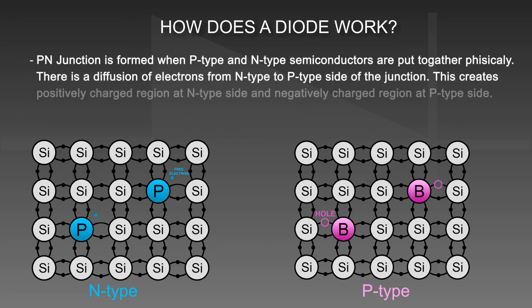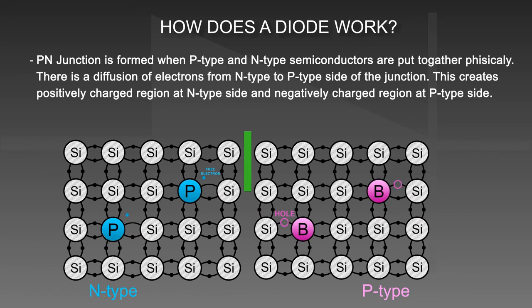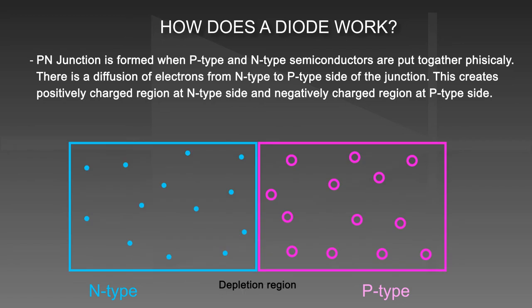A P-N junction is formed when P-type and N-type semiconductors are put together. There is a diffusion of electrons from the N-type to the P-type side of the junction. This creates a positively charged region at the N-type side and a negatively charged region at the P-type side.